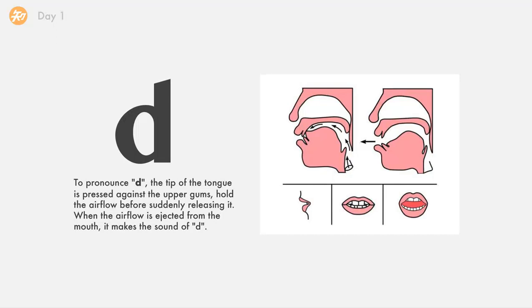The next one is d. To pronounce d, the tip of the tongue is pressed against upper gums. Hold the airflow before suddenly releasing it. When the airflow is ejected from the mouth, it makes the sound of d.